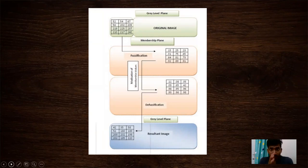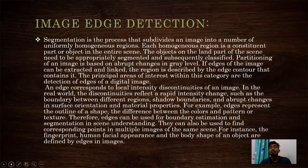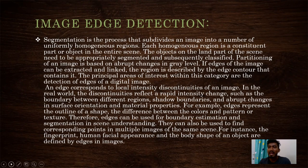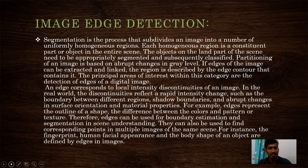We can see the resultant image of the fuzzy logic, and here we have image edge detection. Segmentation is the process that subdivides an image into a number of informally homogeneous regions. Each homogeneous region is a constrained part or object in the entire scene. The objects in the scene need to be approximately segmented and subsequently classified. Partitioning of an image is based on abrupt changes in the gray level, and the edges of the image can be extracted and linked.